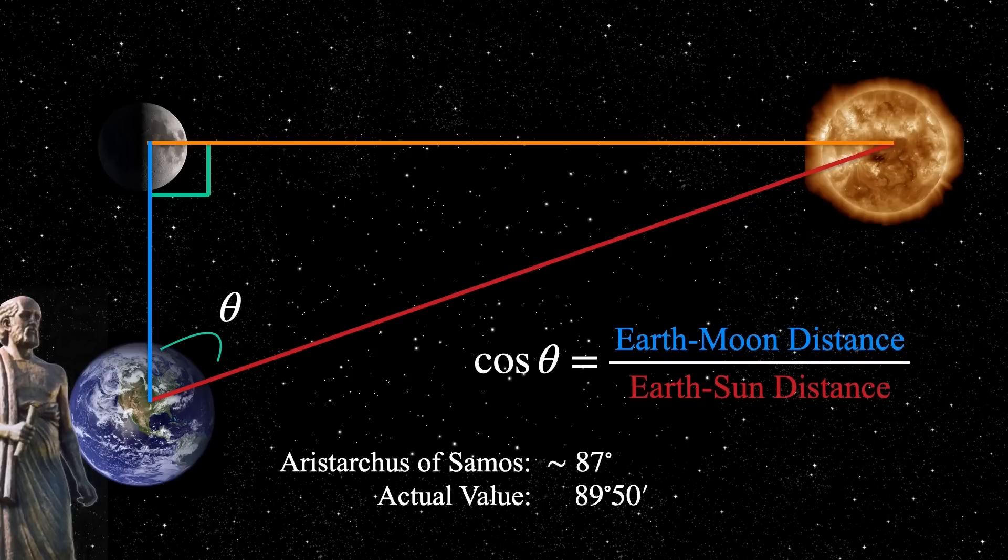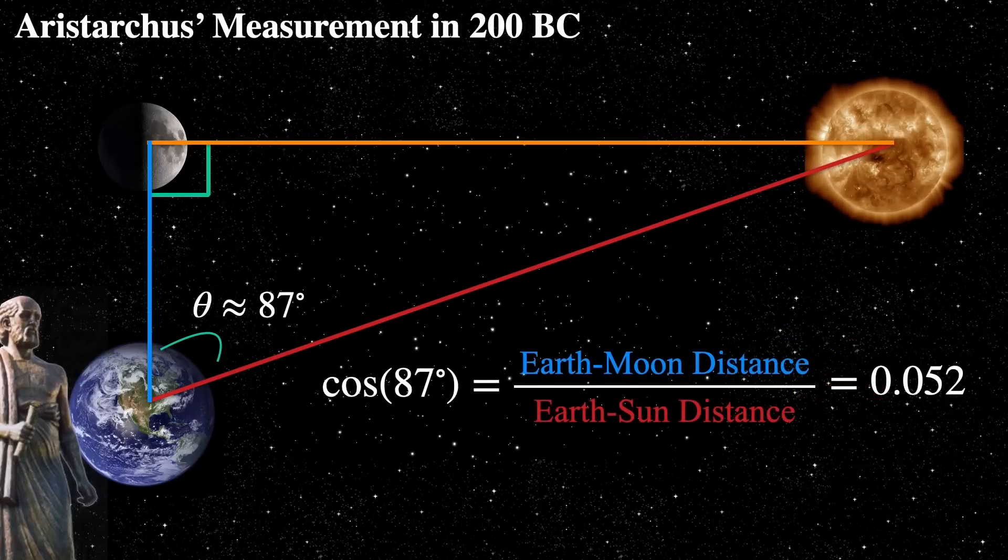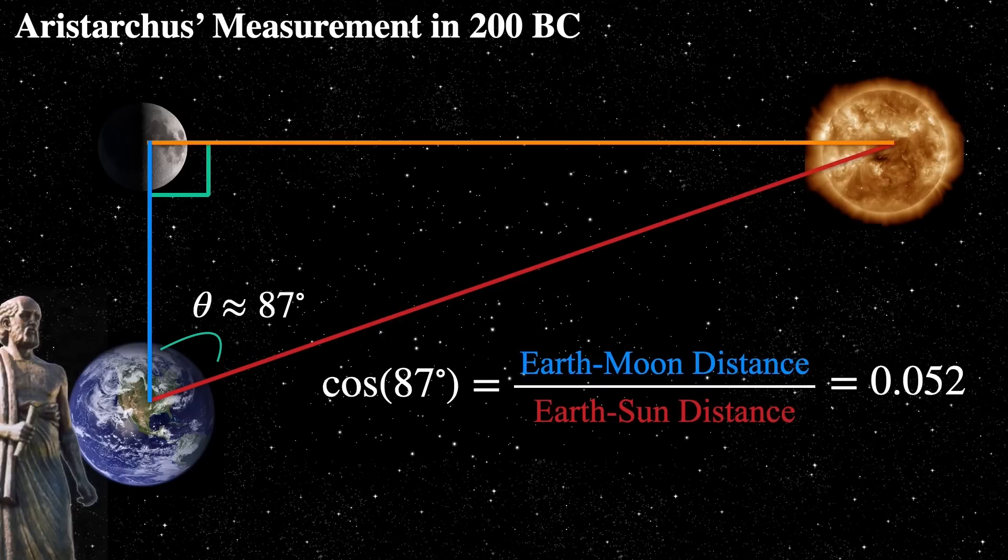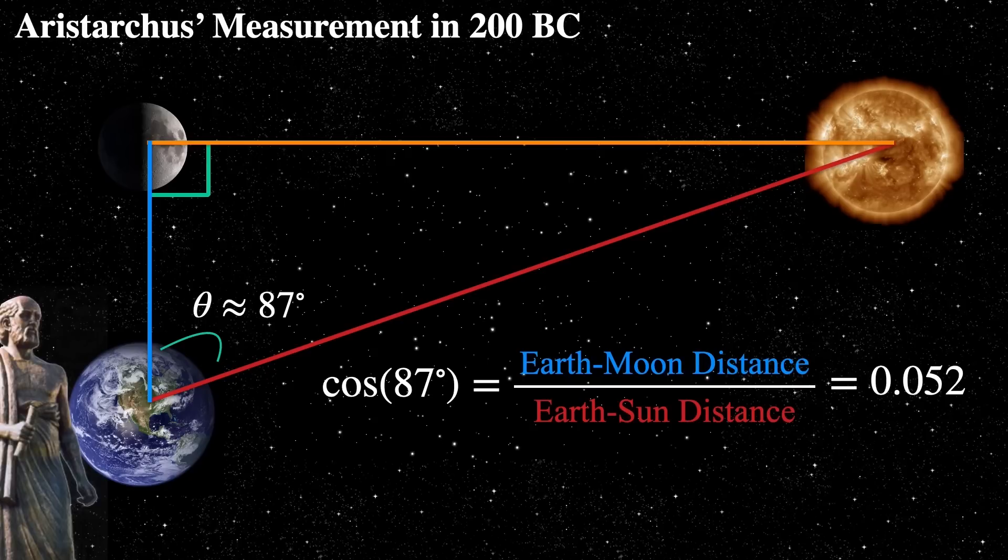So it's a little bit closer to 90 than Aristarchus actually measured. But let's go with his measurement. If the angle of measurement is 87 degrees, then the ratio of the earth-moon distance compared to the earth-sun distance is about 1 to 20. Specifically, the sun's distance is about 19 times that of the earth-moon's distance.